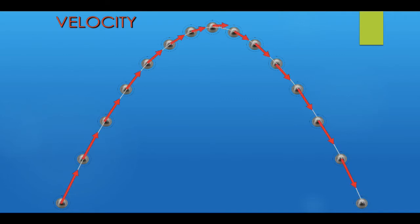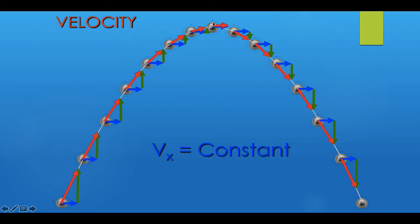As the projectile moves, the horizontal component of velocity stays the same. The vertical component of velocity decreases if the object is going up and increases if it's going down. So the x component of velocity is constant, while the y component changes according to gravity and time.